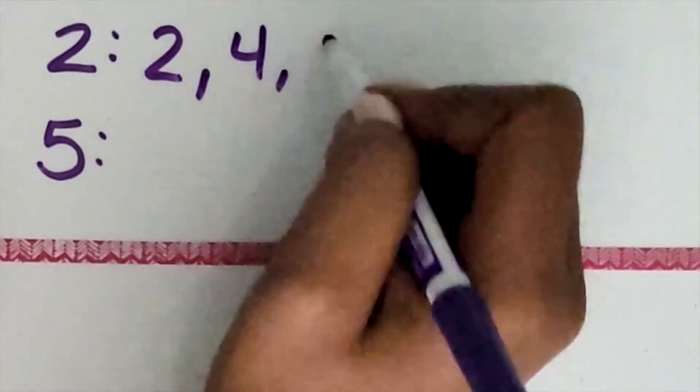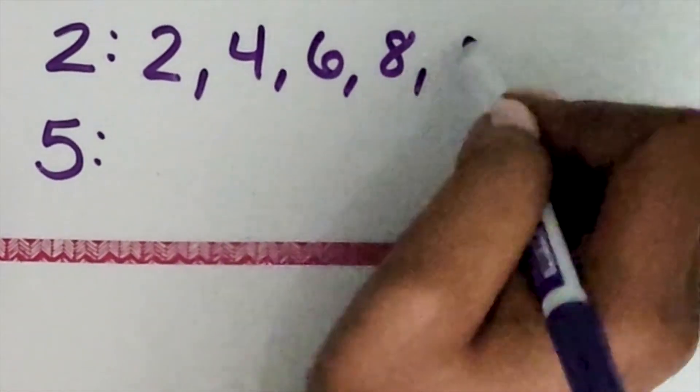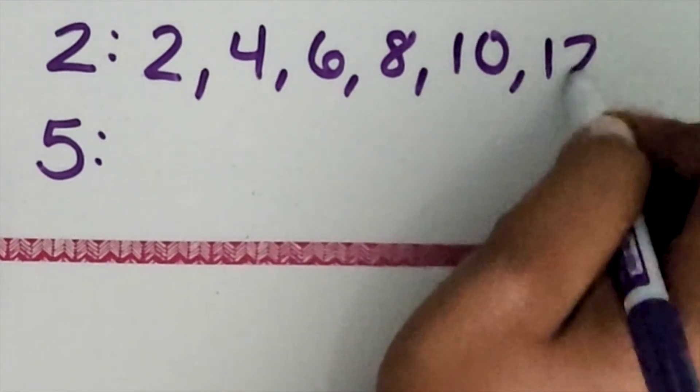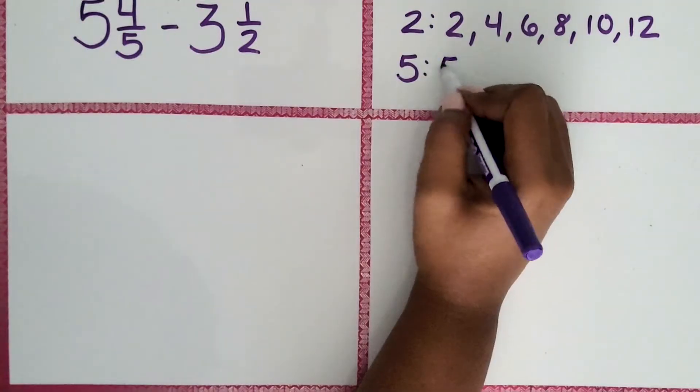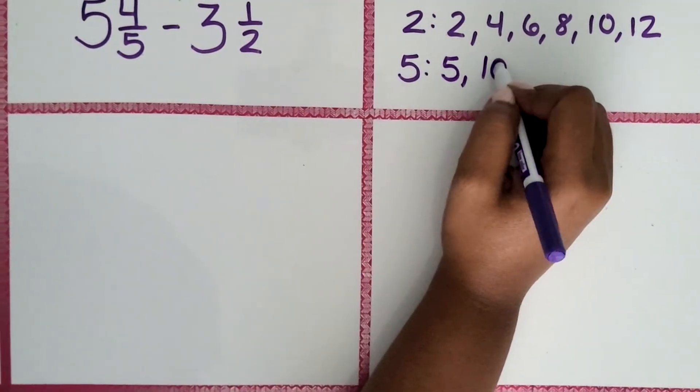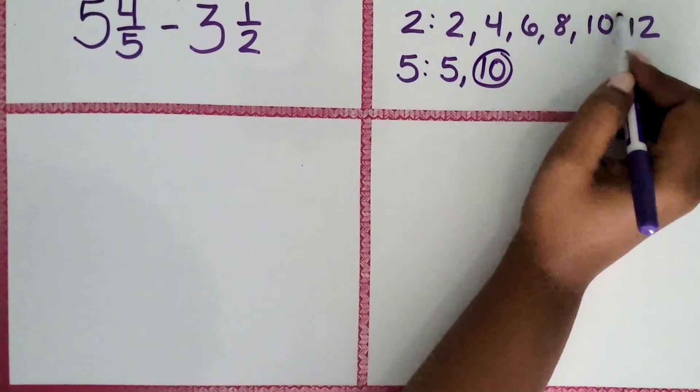2 has 2, 4, 6, 8, 10, and 12. We could keep going, but we're gonna stop there. 5 has 5, 10. Oh, I can stop right there because I see they have 10 in common.